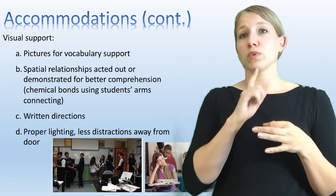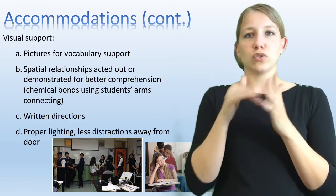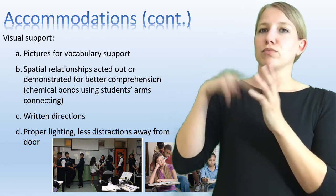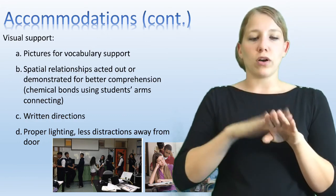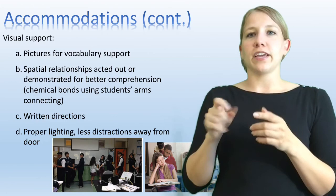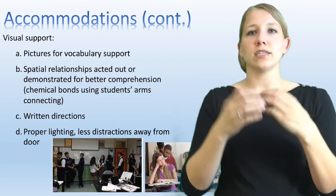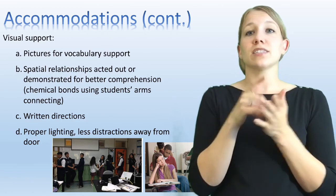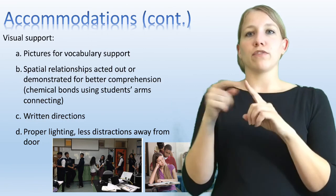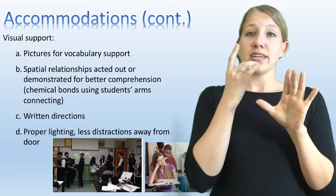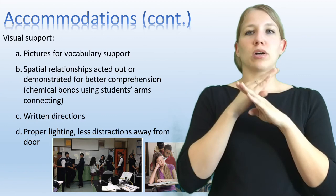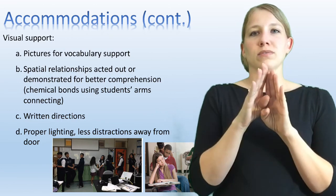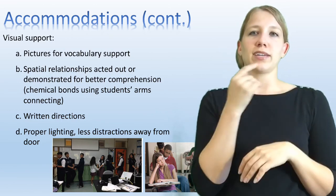Written directions are really important so the student doesn't feel the need to ask, 'What am I supposed to do?' They can read the directions on the board, on their paper, or wherever they're posted so they can follow along in class. Also, proper lighting is important — it's less distracting if the student is away from a window with bright light that blocks the view of the interpreter or teacher, and also away from the door to lessen distractions.